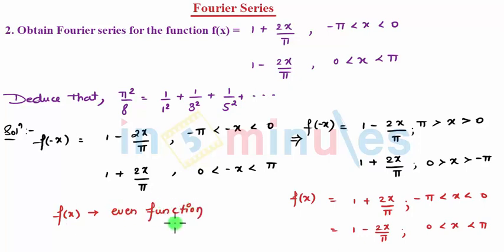So now let's go with the same. Since f(x) is even, your bn is 0. We just need to find A0 and An.